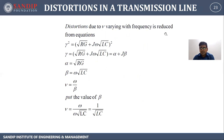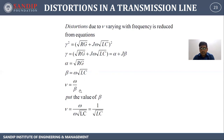Distortions due to velocity varying with frequency are also reduced. From gamma² = [√(RG) + jω√(LC)]², comparing with α + jβ, we get α = √(RG) and β = ω√(LC). Since velocity v = ω/β, substituting gives v = ω/(ω√(LC)) = 1/√(LC), which is constant — independent of frequency.